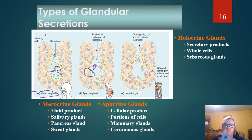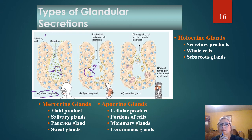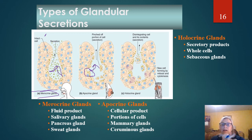Let's do a little quiz. How much cytoplasm is secreted with a merocrine gland? If you said none, you're right. How much cytoplasm is secreted with a holocrine gland? It is the whole cell. And how much is secreted with the apocrine? That's going to be part.